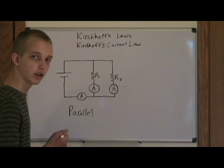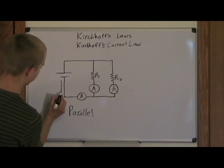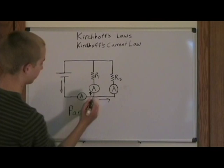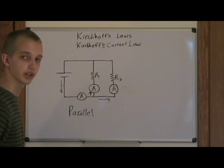According to electron flow, the current will flow from this side of the battery — the negative terminal — and it'll go through this ammeter, and then it'll actually split into two branches. It'll go here, and it'll go up through this ammeter right here. Now, the current across these two resistors is not necessarily the same. It depends on the value of the resistor.